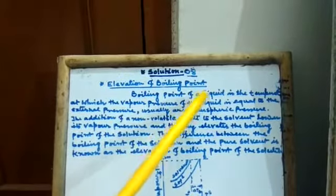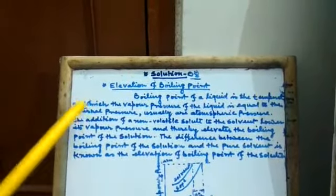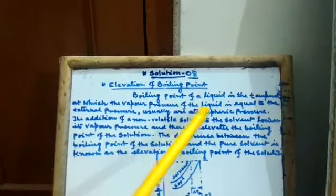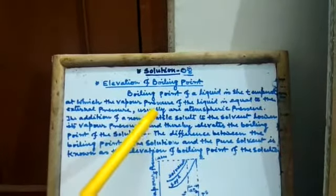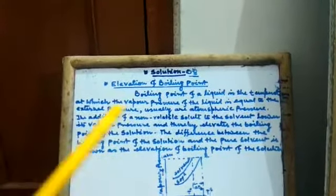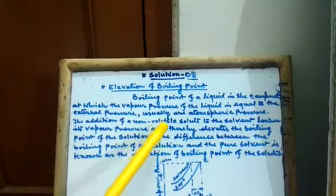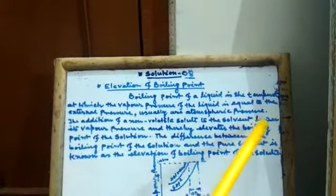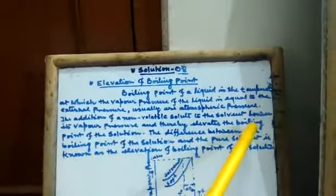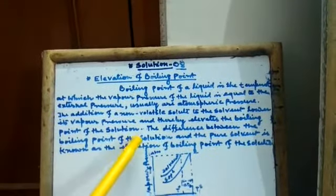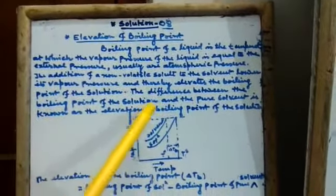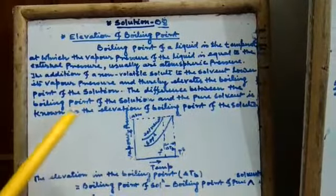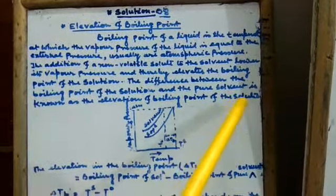Boiling point of a liquid is the temperature at which the vapor pressure of the liquid is equal to the external pressure, usually equal to 1 atmospheric pressure. The addition of a non-volatile solute to the solvent lowers its vapor pressure and thereby elevates the boiling point of the solution. The difference between the boiling point of the solution and the pure solvent is known as elevation of boiling point of the solution.